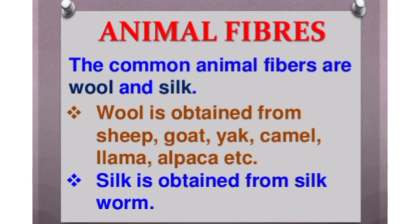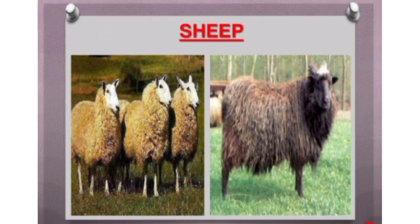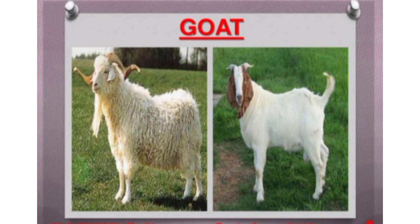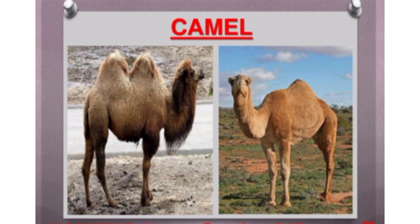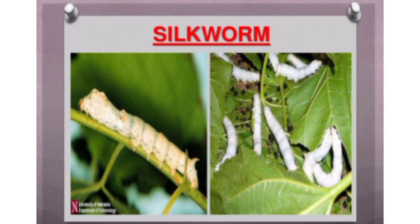First we will discuss animal fibers. The common animal fibers are wool and silk. Wool is obtained from different animals - for example sheep, goat, and camel. This is the picture of the sheep and this is the picture of the goat. From these animals we get wool. And this is the picture of the silkworm from which we get natural silk. Silk fibers come from the cocoon of the silk moth.